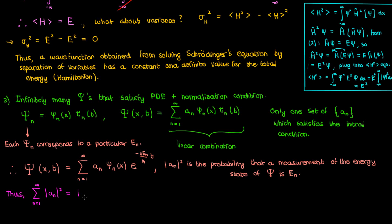Finally, using the fact that A_n squared represents the probability of measuring E_n, we can write the expectation value for the Hamiltonian as the sum from n equals 1 to infinity of A_n squared times E_n.